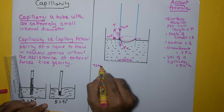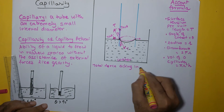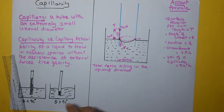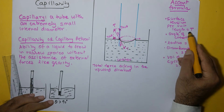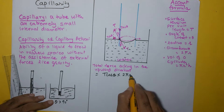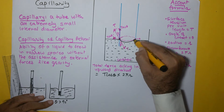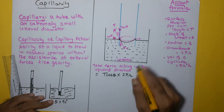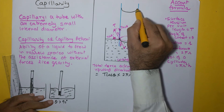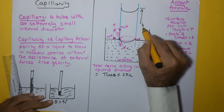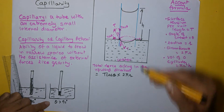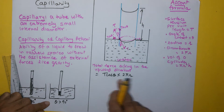We have T cosθ acting upward along the entire circumference at all points. Therefore, the total force acting in the upward direction on the meniscus is T cosθ multiplied by the entire circumference: T cosθ × 2πr. Due to this force, the water column rises up to a height h. The height is decided such that this upward force is able to balance the weight of the liquid column which has risen.